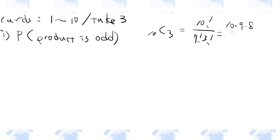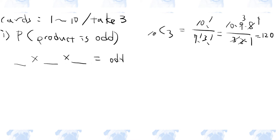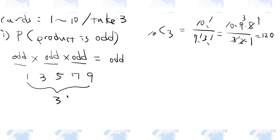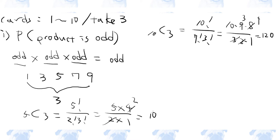10 times 9 times 8 over 3 times 2 times 1 gives 120 ways to take 3 cards out of 10. In order for the product of 3 numbers to be odd, each of the 3 numbers must also be odd. There are 5 odd numbers between 1 and 10, so we are choosing 3 out of 5, which is 5 choose 3, equaling 10. The probability of the product being odd is 10 over 120, which is 1 over 12.